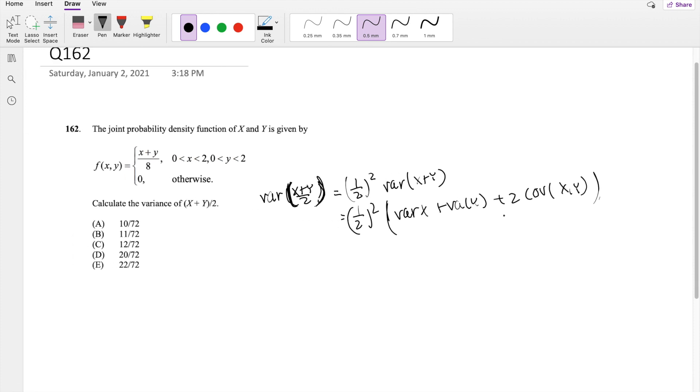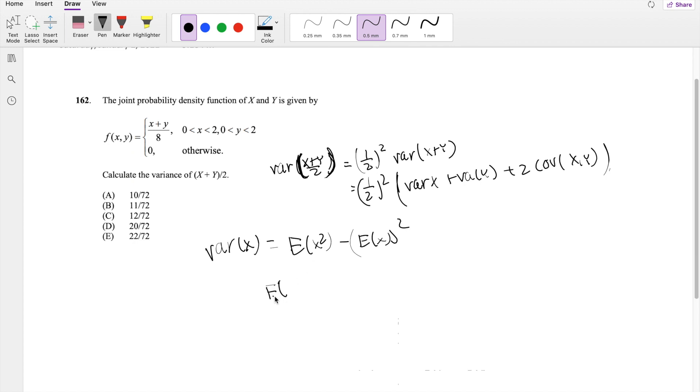We know the variance of x plus y is equal to the variance of x plus the variance of y plus 2 times the covariance of x and y. We have to add that covariance because they don't tell you this is independent. The covariance measures how similar x and y are. Let's start with the variance of x using our formula: the second moment minus the first moment squared.